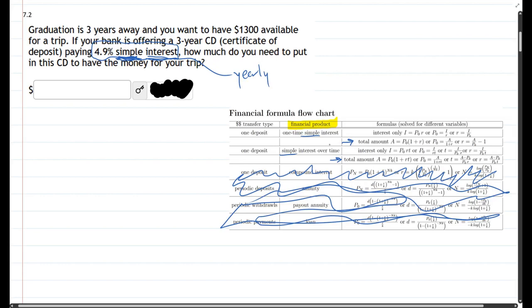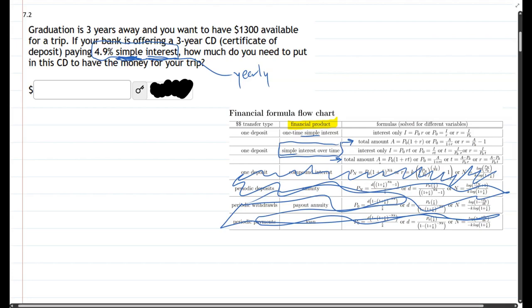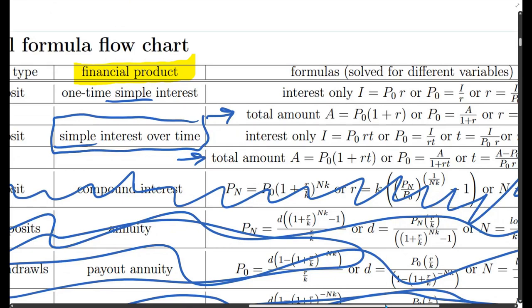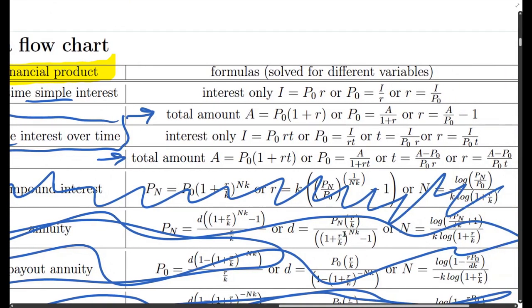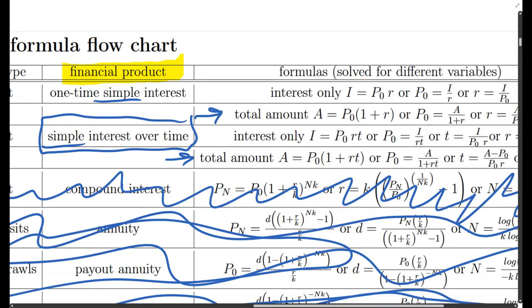And because of that we have simple interest over time, there's three years in this question. So which of these do we need for our question? They give us the total amount at the end, so they give us A, and they're asking for the initial deposit which is always going to be P0. So this is the formula we need to use right there.